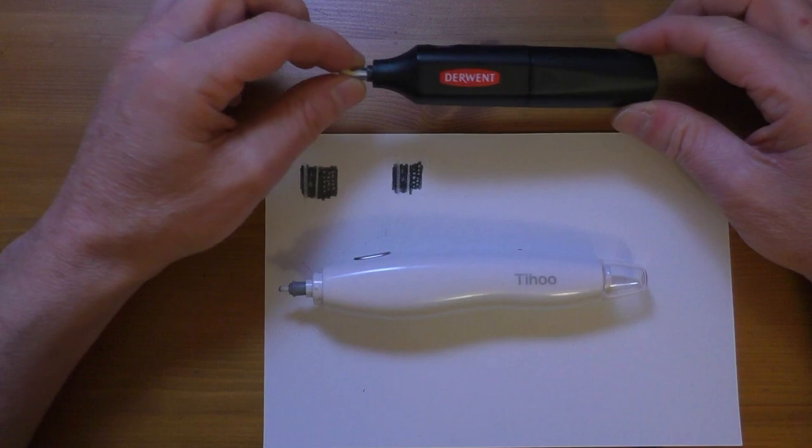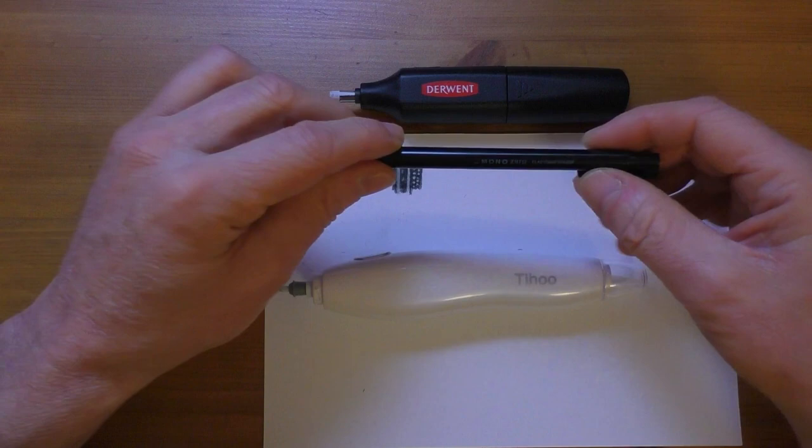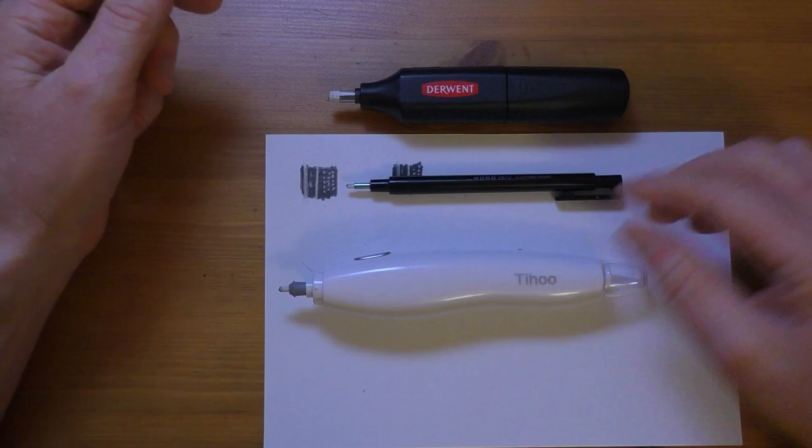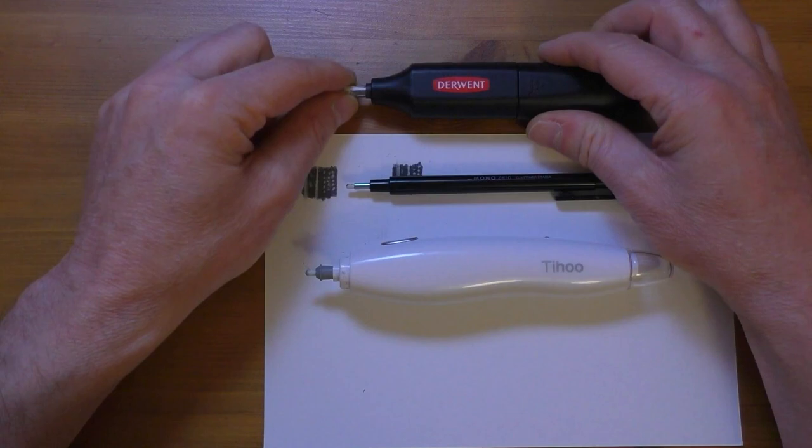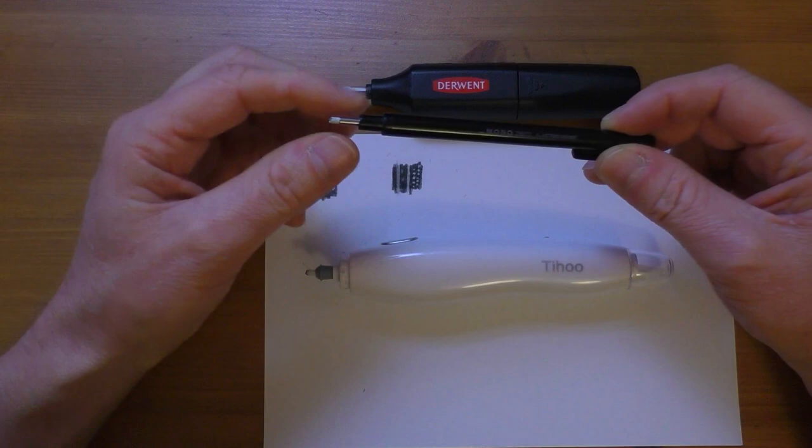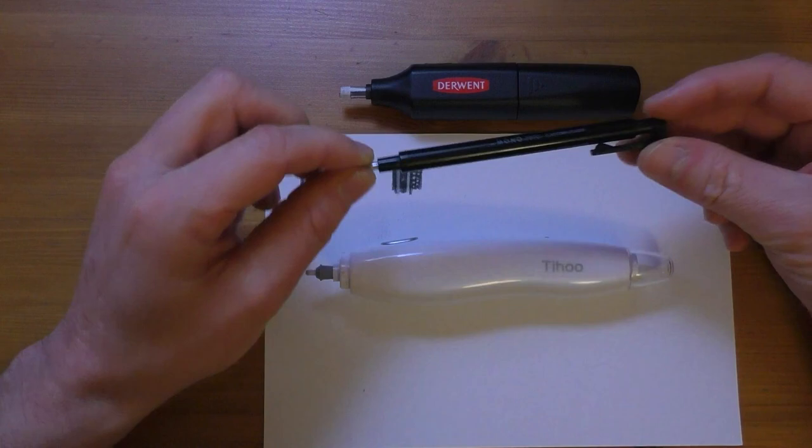Now it doesn't mean you have to go and retire or throw out your Derwent eraser or your Tombow mono eraser. There's still lots of uses for them, just for convenience sake. For example, instead of having to keep changing out the tip if you want a larger tip, you can just leave that on your desk as well and just use that when you need the larger eraser in there. And the same with this - I'm sure we can still find uses for that. That's still going to play a part in my kit, I'm not going to get rid of either of them.